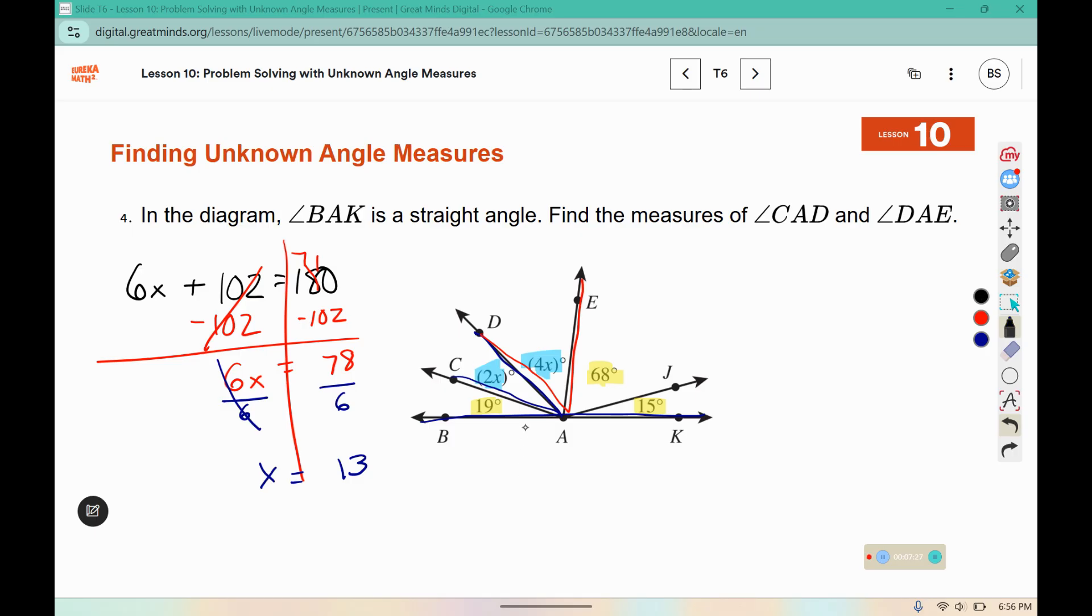So 2x, or angle CAD, is 2 times 13, which would be 26 degrees. And angle DAE is 4 times 13, which would be 52 degrees.